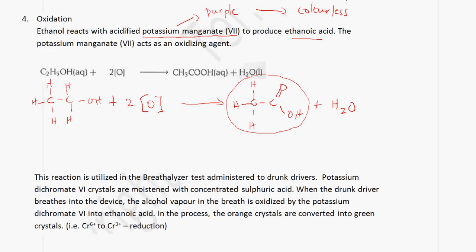Potassium manganate(VII) is purple, and when it reacts with the alcohol, it changes into a colorless solution. Potassium manganate(VII) is an oxidizing agent, and when it acts as an oxidizing agent it is itself reduced. The purple color is due to the manganese having an oxidation state of +7. When it is reduced, it changes oxidation state to +2. When we have a reduction in oxidation number, we say that the species is reduced.